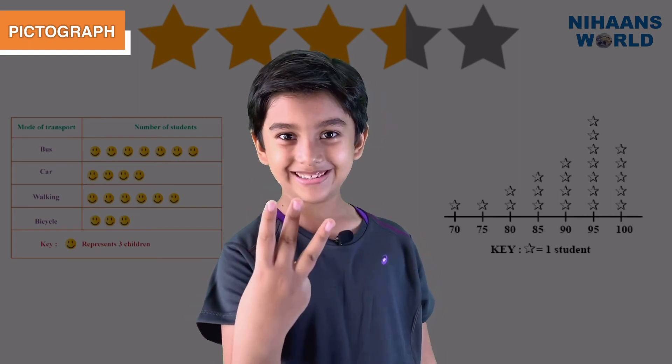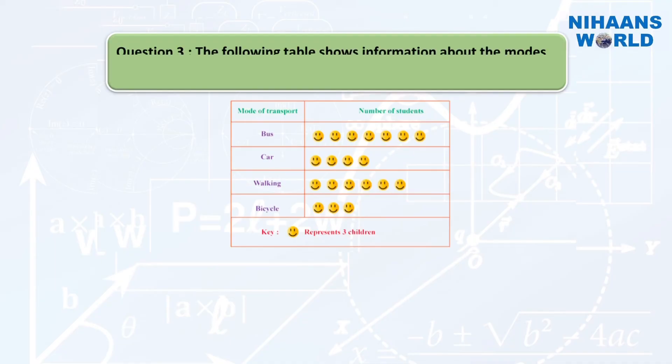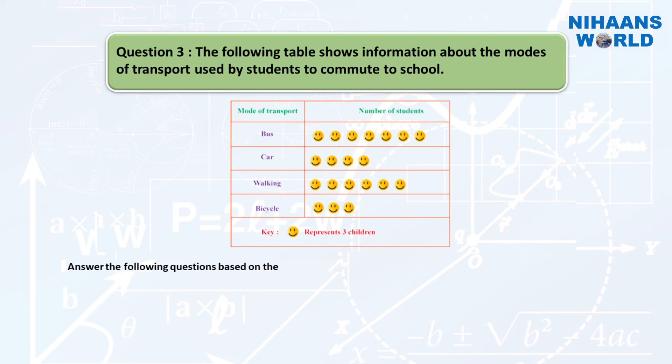Let's see the third example. The following table shows information about the modes of transport used by students to commute to school. One smiley represents three children. Answer the following questions based on the information given above...